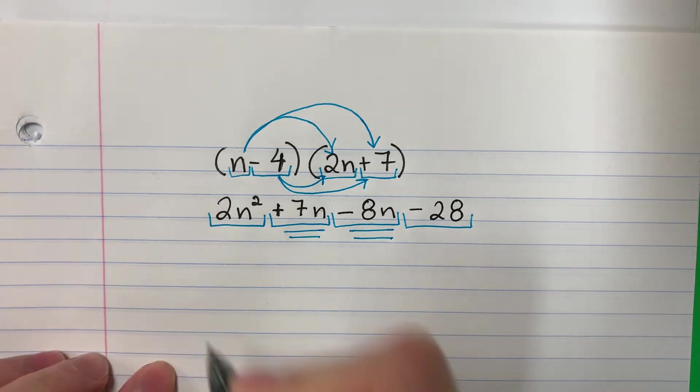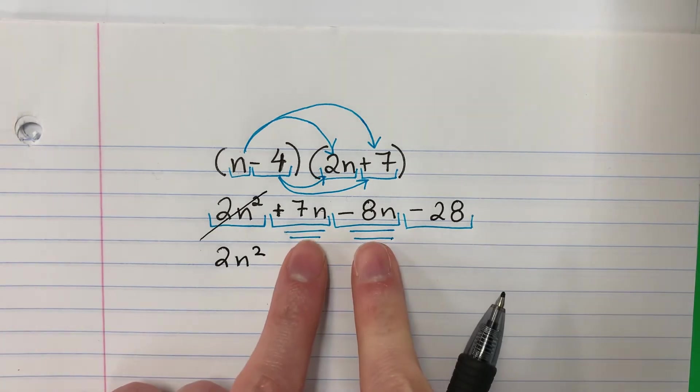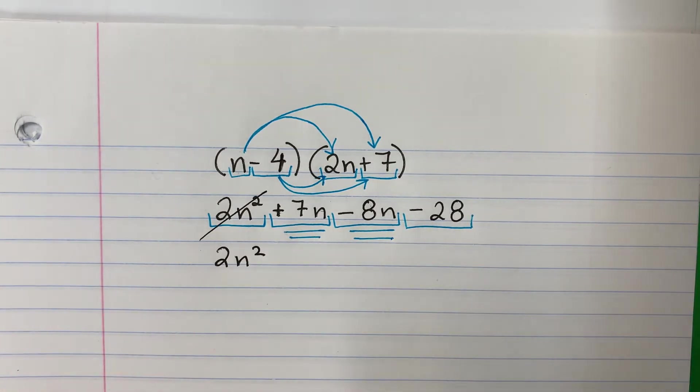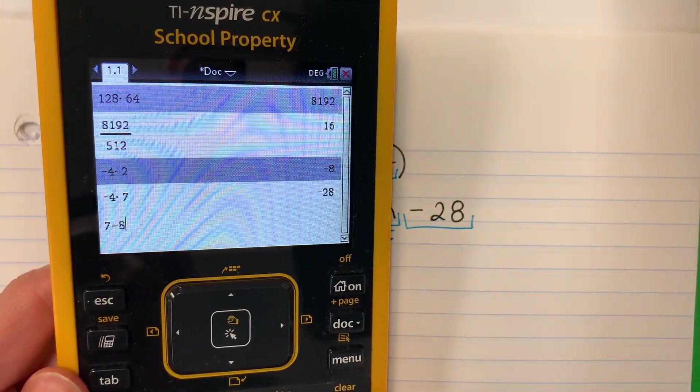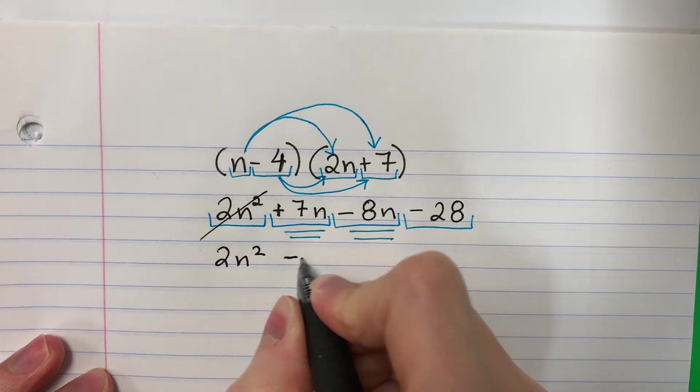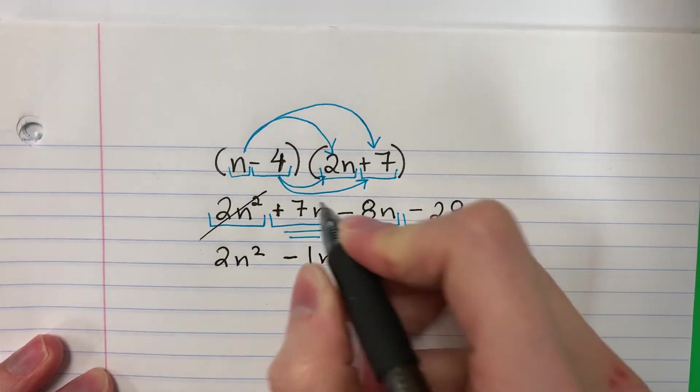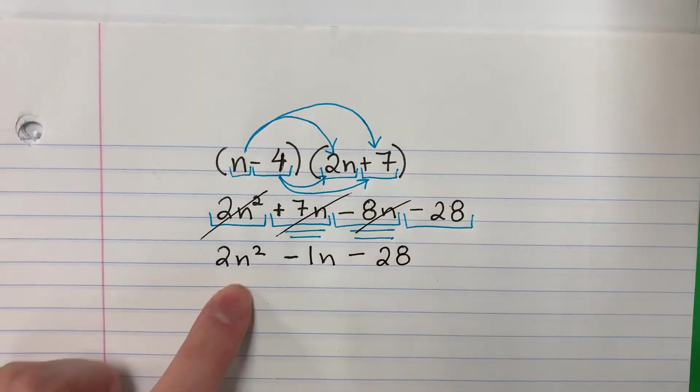So this, you're going to copy. 2n squared. Done. And then you're going to do 7 minus 8. Siete menos 8. 7 minus 8, that is negative 1, negativo 1. Copy n. This is alone. Minus 28. So this is your answer.